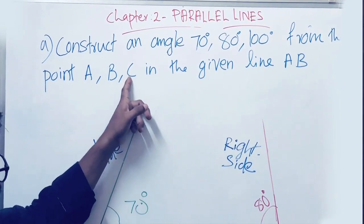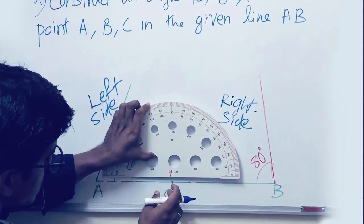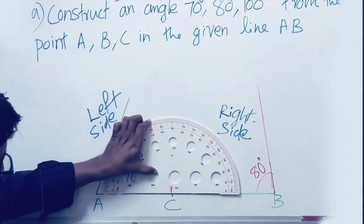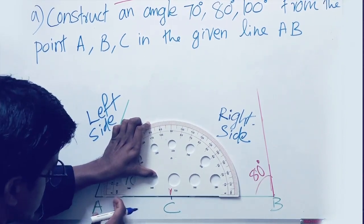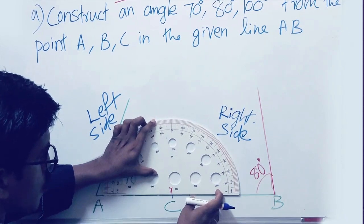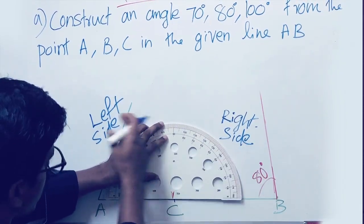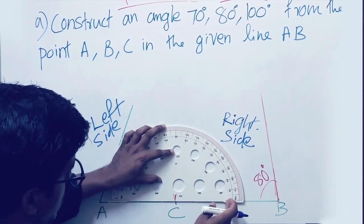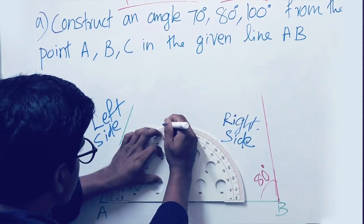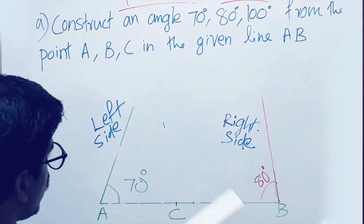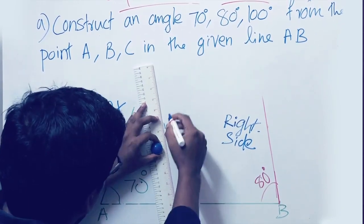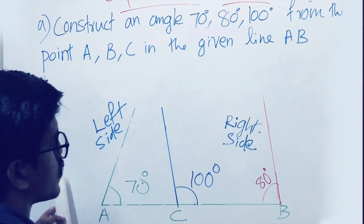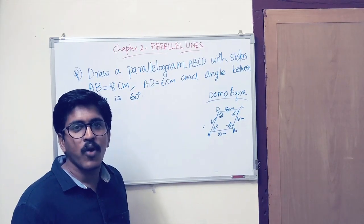Now we can construct 100 degree from the point C. The center point of the protractor should coincide with point C, and the entire line should coincide with the baseline. Here both zeros are touching the line — so according to your question, you can start counting from the right side zero or left side zero. I am going to count from the right side zero. Here it is 100 degree. Now we join vertex C and the marking point. We got 100 degree. All of you now understand how to construct an angle.